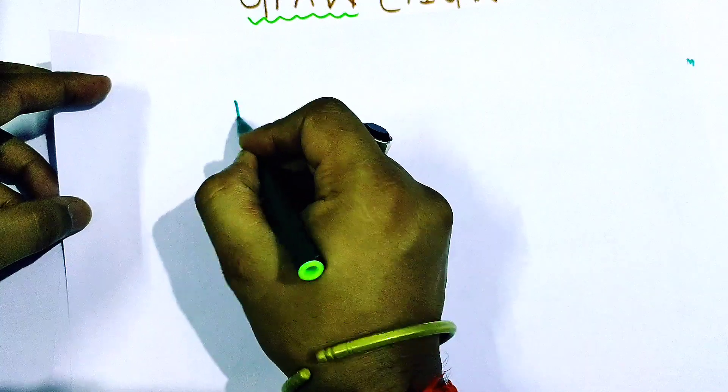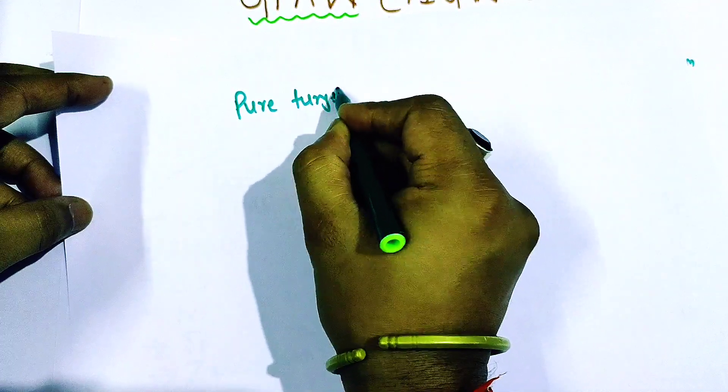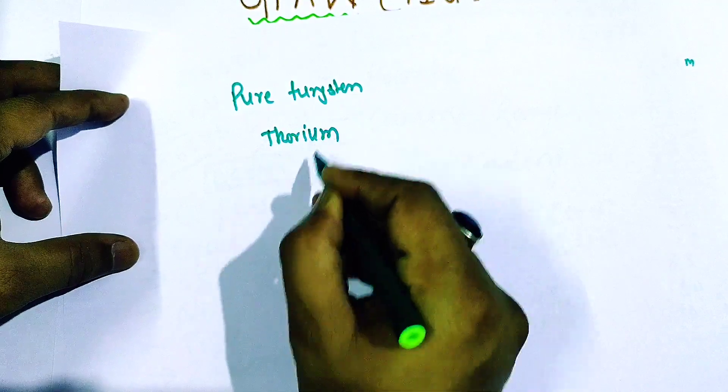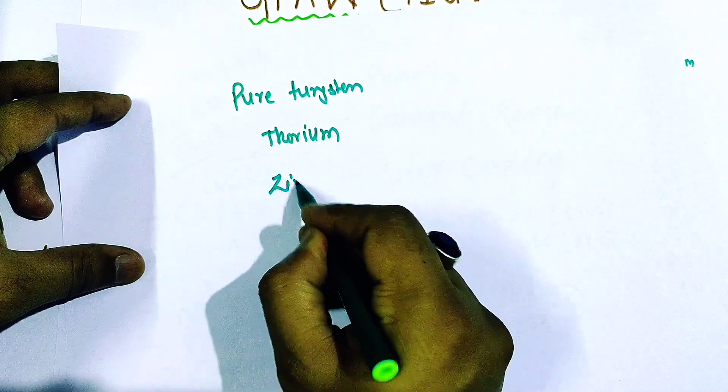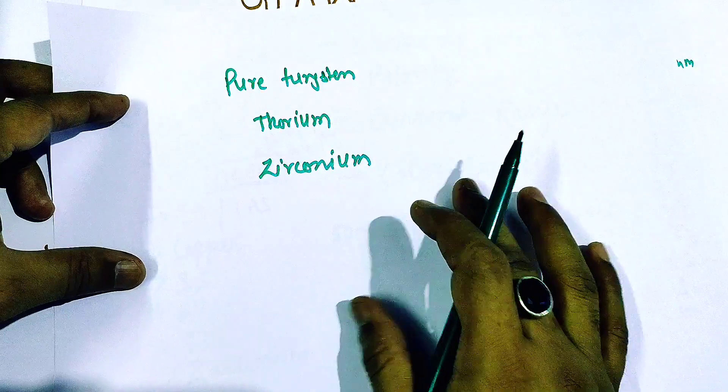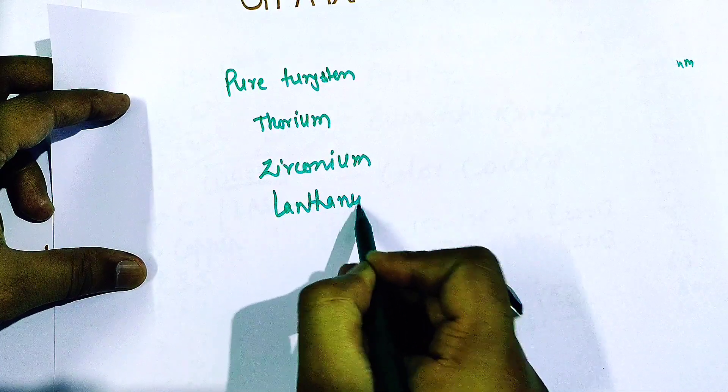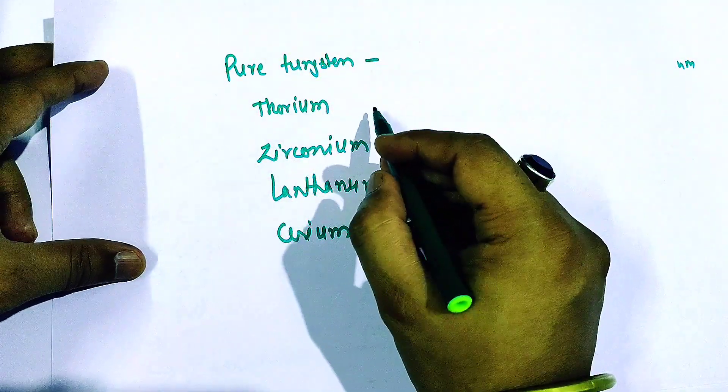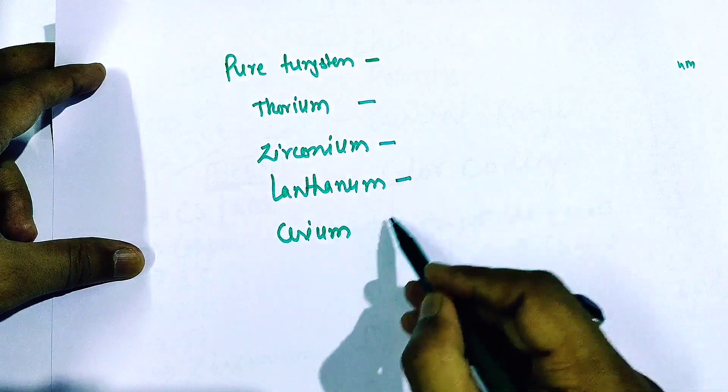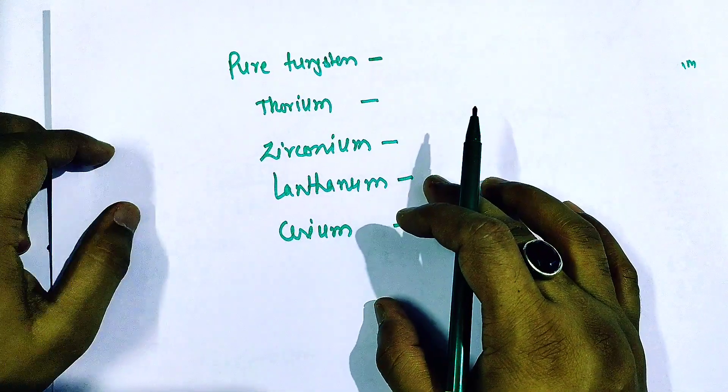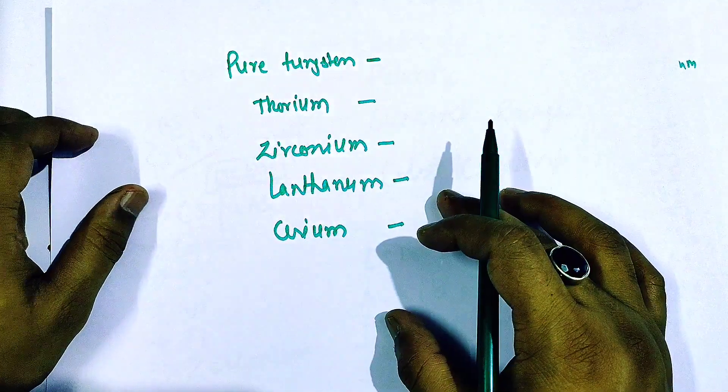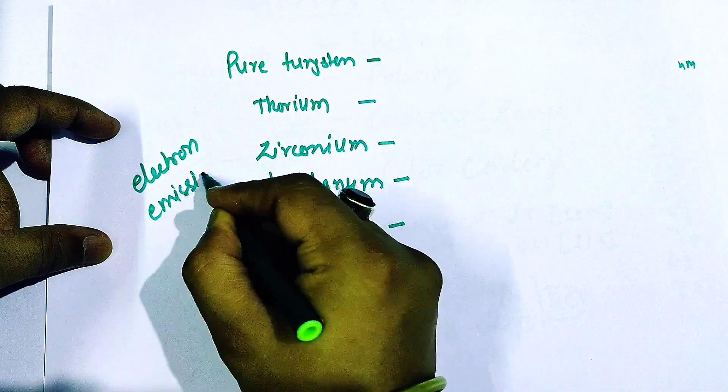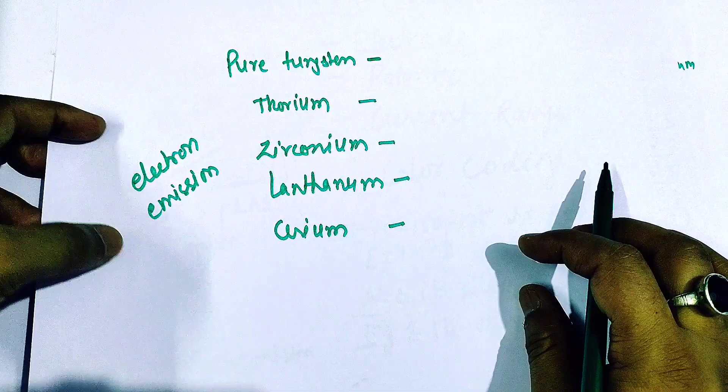So the color coding which is given is, see, either pure tungsten can be used as electrode, or a tungsten mixed with a little amount of thorium or a little amount of zirconium, or a little amount of lanthanum, or cerium. So either pure tungsten electrodes can be used, or a little amount of thorium, zirconium, lanthanum, or cerium may be added. These amounts of extra substances are added to increase the electron emission. So to increase the electron emission, these are added in very small amounts.